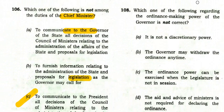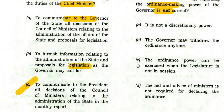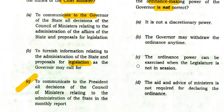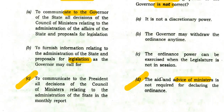Which statement regarding the ordinance-making power of the Governor is not correct? It is not a discretionary power — true. The Governor may withdraw the ordinance any time — possible. The ordinance power can be exercised when the legislature is not in session — obviously. The aid and advice of ministers is not required — false. The aid and advice of ministers is required; the Governor cannot declare an ordinance on his own.